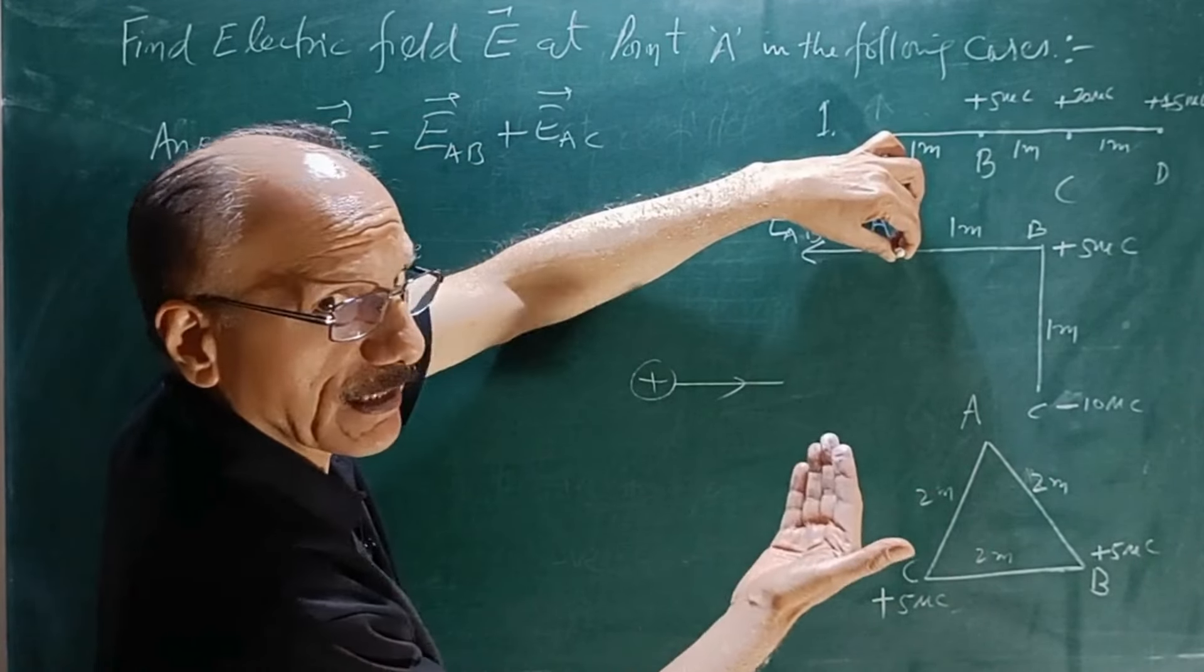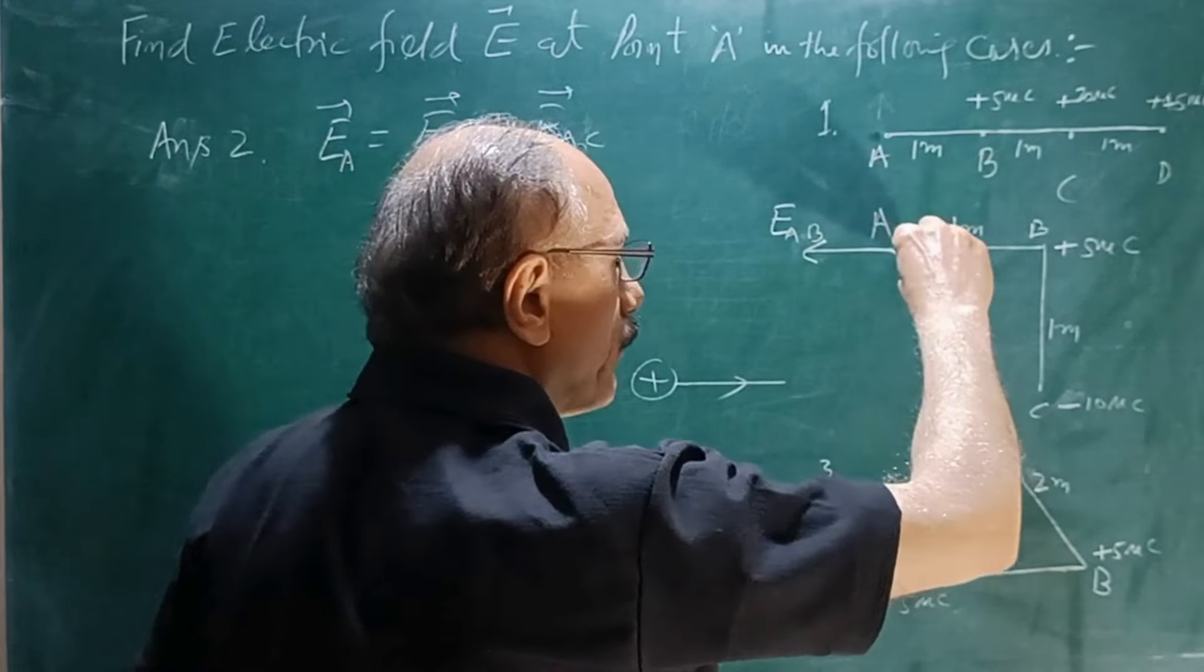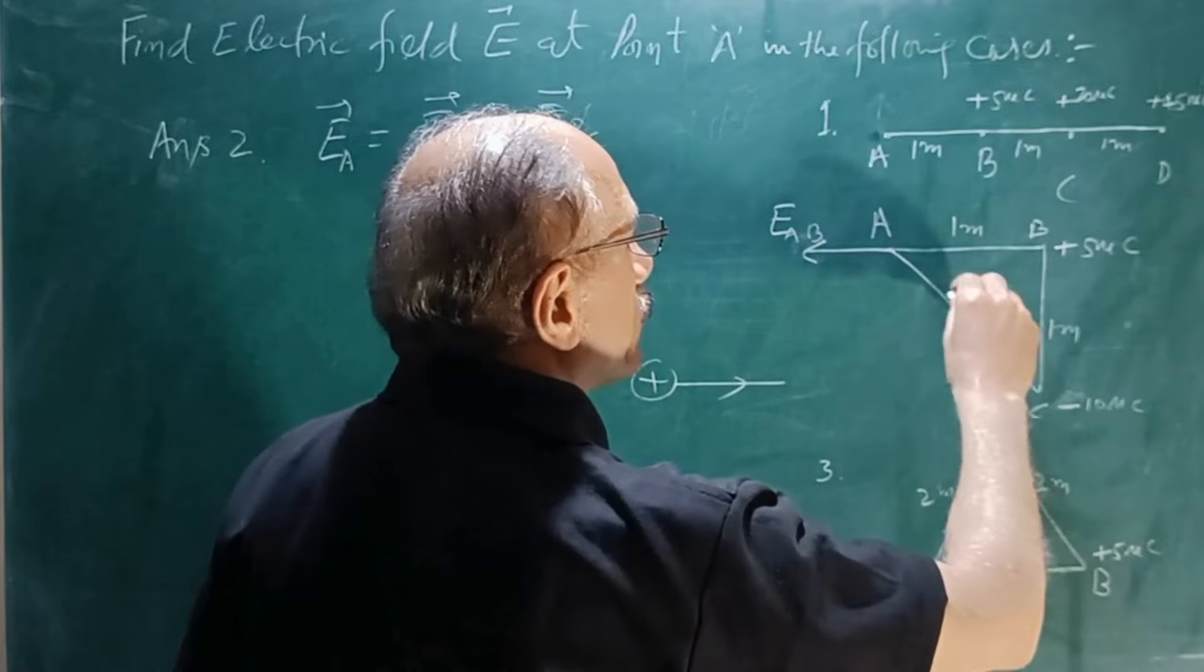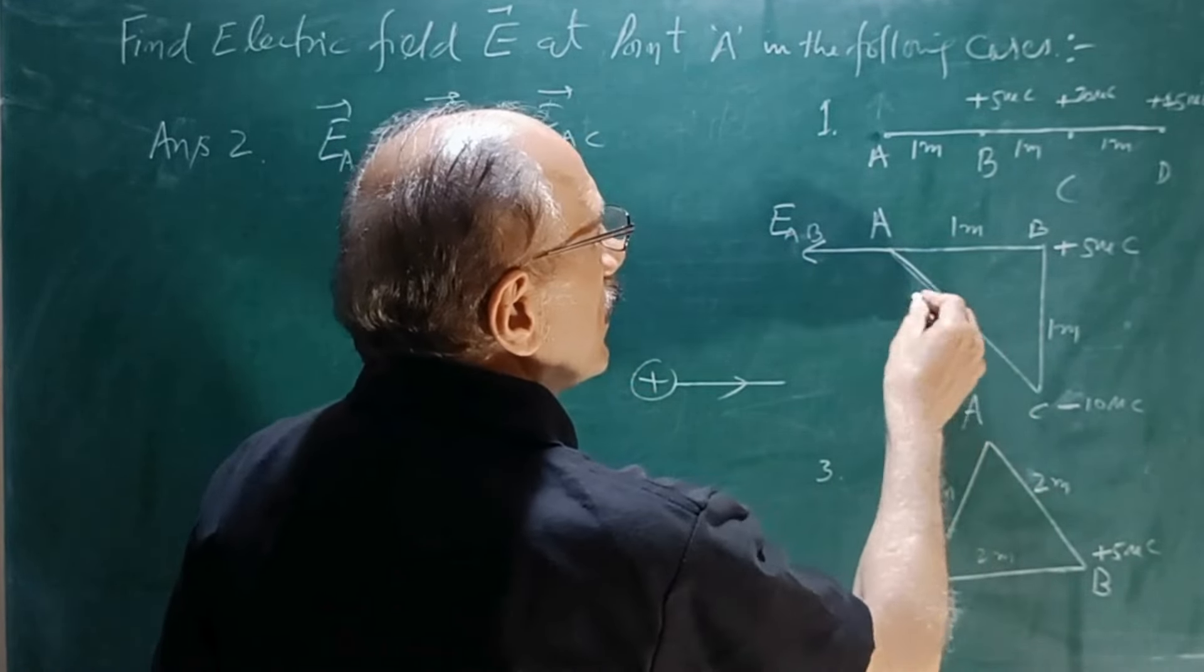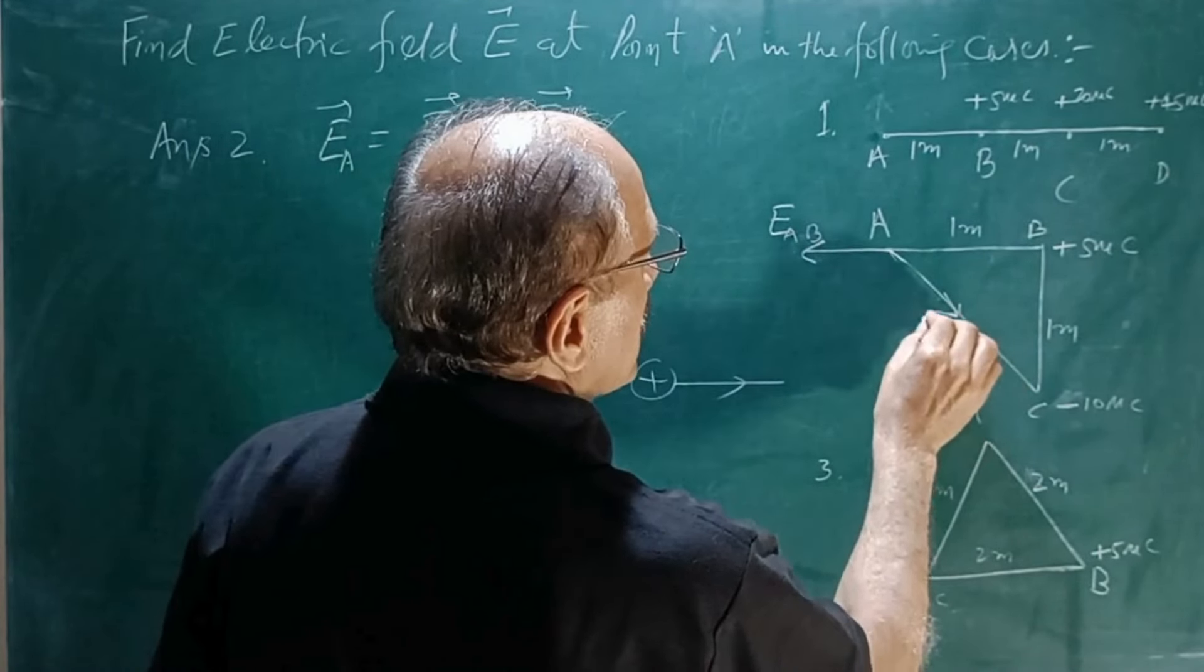In case of negative, the electric lines of force were inward. So this pen will be inward. So this will be the direction of the electric field EAC.